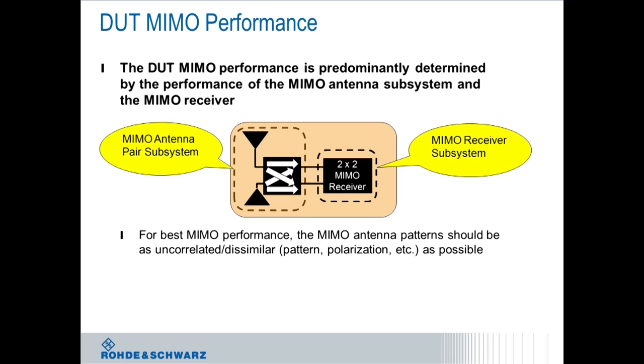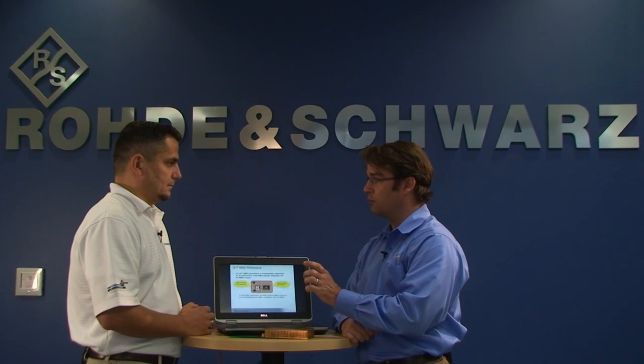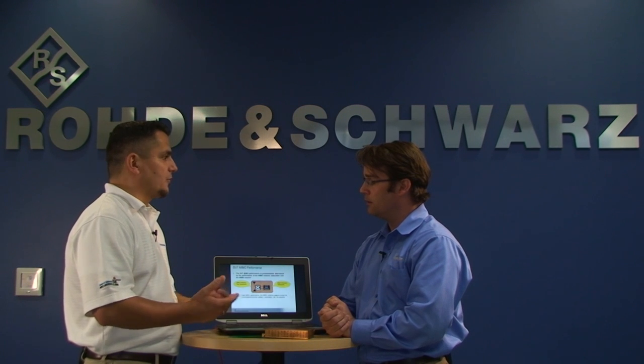Each one of these contributes to good or bad MIMO performance. So it's important that we develop an approach that will allow you to look at both of these subsystems individually and then combine them later on. So you're saying the antenna contributes to MIMO performance as well as the receiver or baseband implementation. Absolutely, both of those.